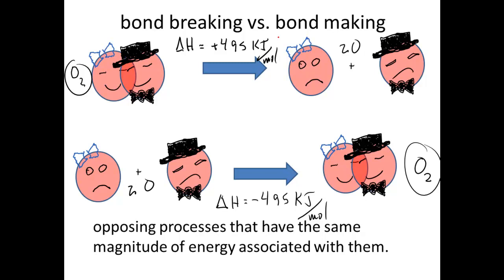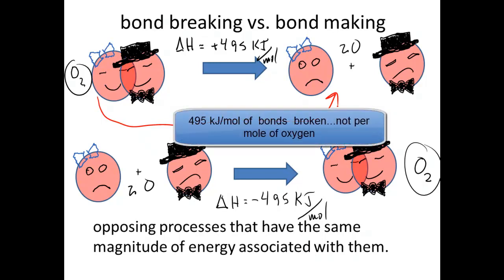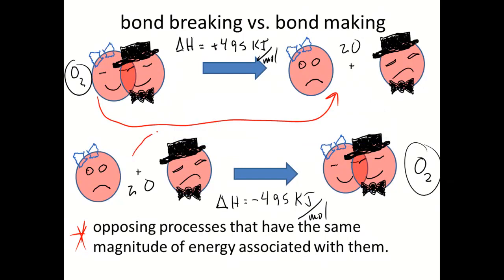So if you're going from O2 and splitting the O2 apart just to make two oxygens, that's going to require an input of 495 kilojoules per mole. Now hopefully it makes sense to you then that if we just reverse that reaction, the opposing processes will have the same magnitude of energy. All we'll do is change the sign. So making a bond and going from two oxygens to O2 is going to release 495 kilojoules per mole for this reaction.